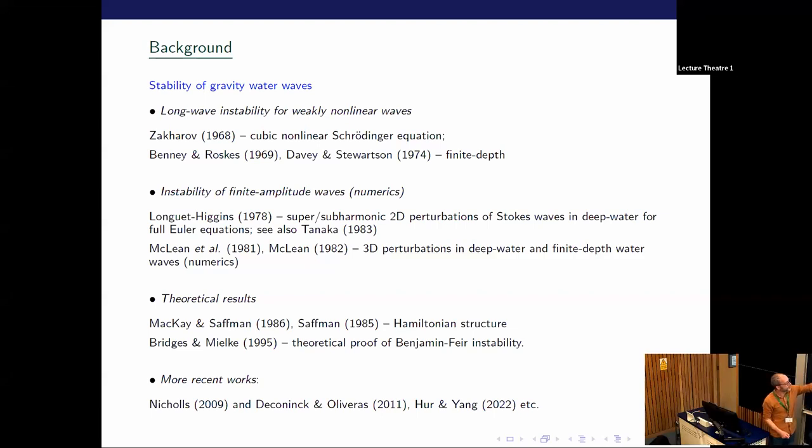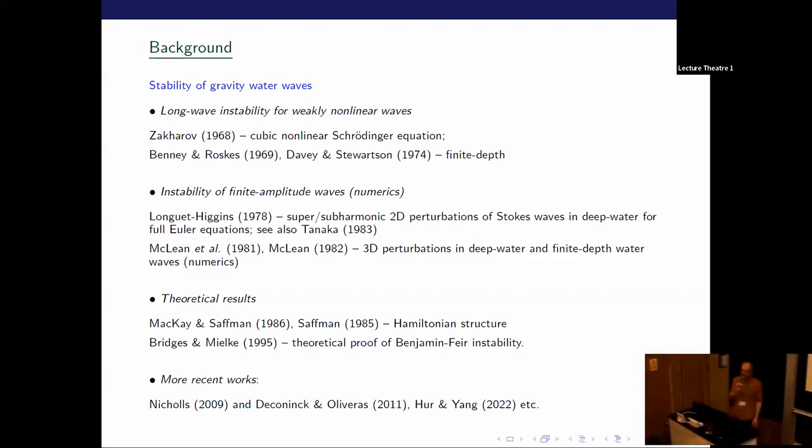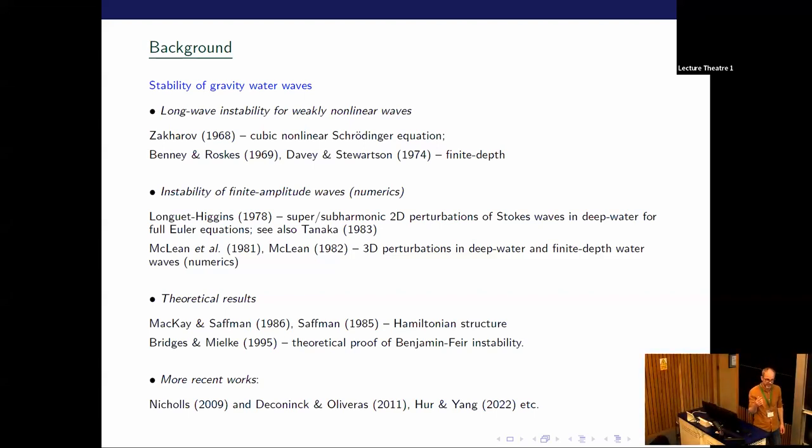Longuet-Higgins papers in the late 70s distinguished between superharmonic and subharmonic instability. So superharmonic means that the wavelength of your perturbation is the same as the base wave or a fraction of it, and subharmonic is longer. McKay and Saffman in 1986 showed that an instability has to arise through a collision of eigenvalues, but that's a necessary but not sufficient condition.